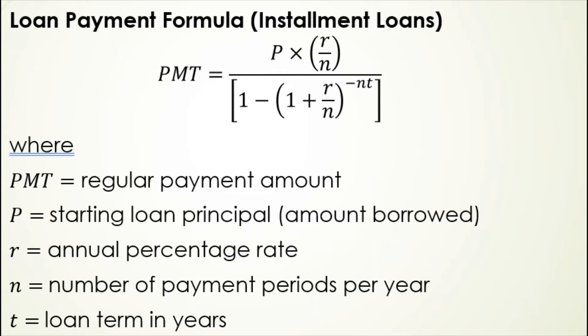And then all of that is going to be divided by all of this, and this is where you have to be careful when you're entering this into a calculator because all of this has to go into the denominator. It's 1 minus (1 plus the interest rate divided by n) taken to the negative n times t power, where t is the loan term in years.